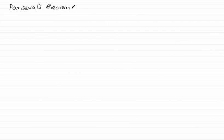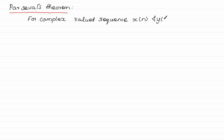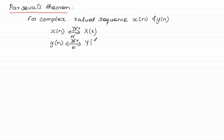Parseval's theorem: for complex-valued sequences x(n) and y(n), with DFTs X(k) and Y(k) respectively, the summation from n=0 to N-1 of x(n) times the complex conjugate of y(n) is equal to (1/N) times the summation from k=0 to N-1 of X(k) times the complex conjugate of Y(k).